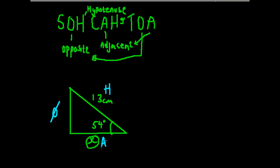So we've got our adjacent here and our hypotenuse. So it's cosine. We write cos of 54 degrees equals adjacent over hypotenuse, so we've got X over 13.